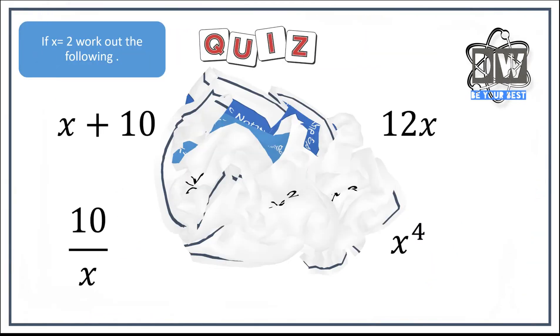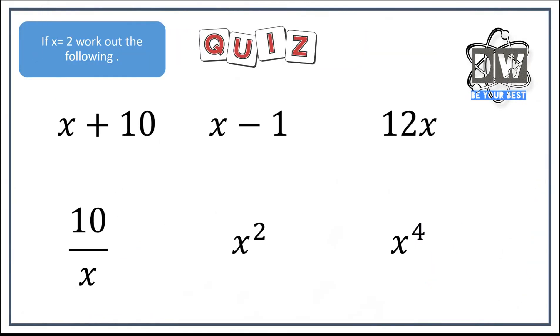So there we go. Hopefully you are in the right zone for the quiz. So this time x equals two. So take away the x, put in two, away you go. Bob's your uncle, Trevor's your aunt. Pause the video now, give it a go and see if you've got it right.